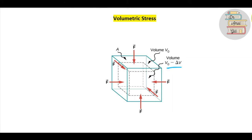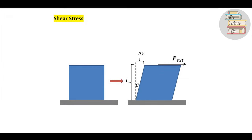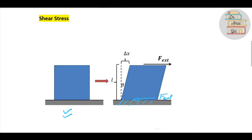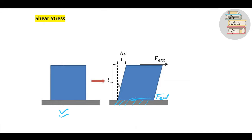For shear stress, consider a normal body without any external forces. When an external force is applied on the top and the body is fixed from the bottom, there must be a reaction force equal and opposite to the external force, otherwise the body will move. The body deforms such that one side tilts at an angle theta. The area considered is the top layer on which the external force is applied, so shear stress equals F external divided by area.